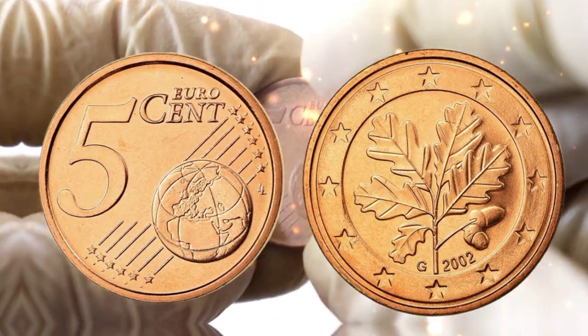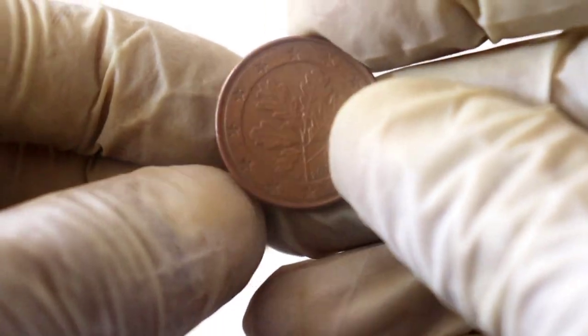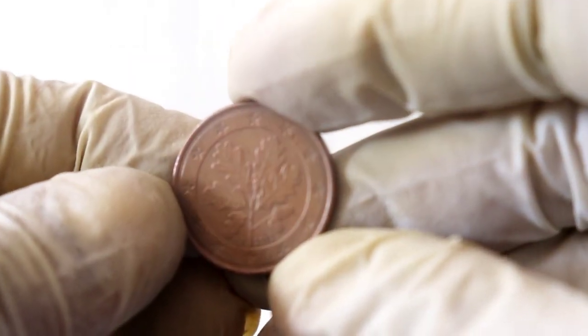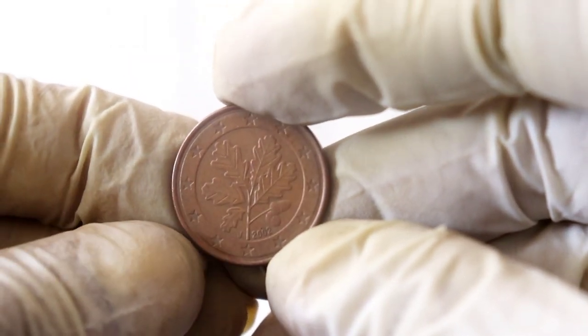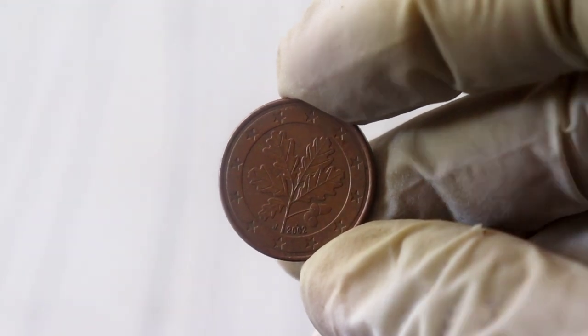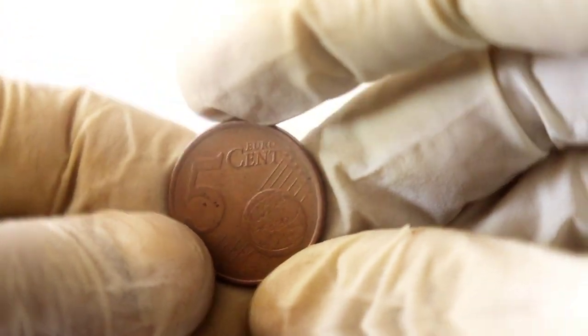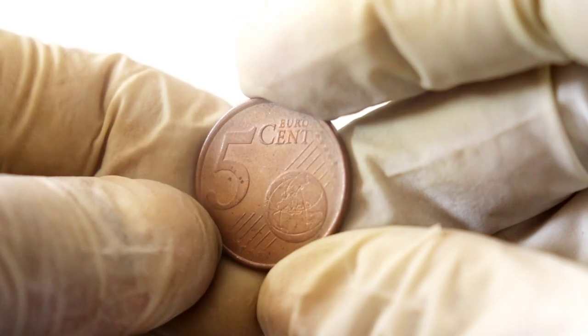But it's the reverse side where the magic happens. Take a close look at the reverse side of the 5 Eurocent 2002 coin. The intricate design showcases the Vitruvian Man, inspired by Leonardo da Vinci's iconic drawing. This fascinating representation of the human body is encircled by the 12 stars of the European Union. Such a beautiful design can often contribute to its higher worth among collectors and numismatists.